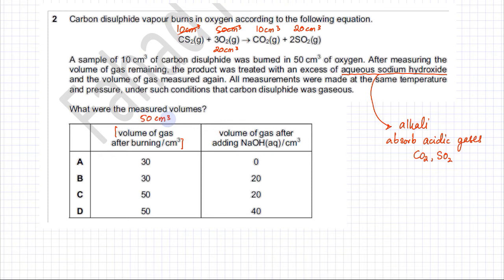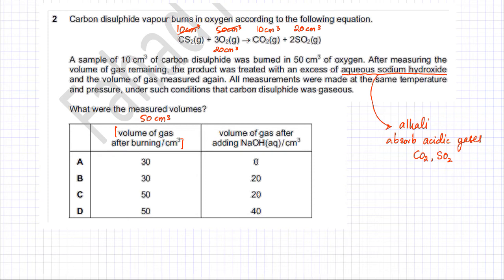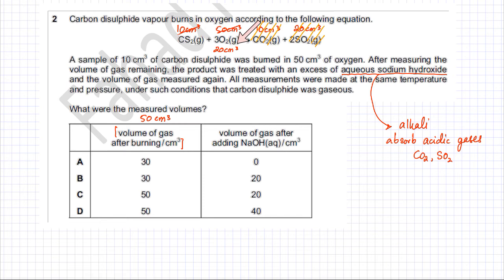The other measurement required is the volume of gas after adding NaOH. NaOH is an alkali and absorbs acidic gases — in this case CO₂ and SO₂. These gases are absorbed and removed. The only gas remaining is the 20 cm³ of unreacted oxygen. So after treating with NaOH, the volume of gas remaining is 20 cm³, which corresponds to option C.